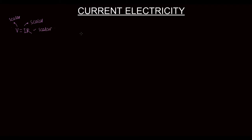We cannot take I as a vector because it does not add like vectors. For example, a wire carrying current in one direction and another wire carrying current at an angle — at the junction, I and I will add up irrespective of the angle made by the two wires. So current is not dependent on the angle of the wire, and that is why current is not taken as a vector.